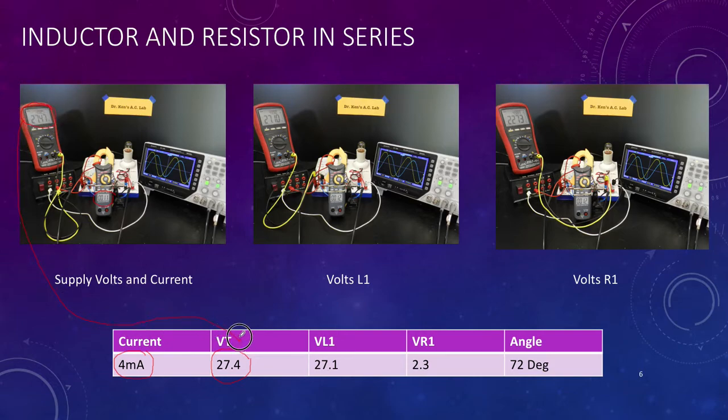Then we needed to know the voltage across the inductor itself. So I've simply moved the leads of the multimeter across here onto the inductor, and we've got 27.1. So that's where this value comes from, 27.1. And then finally, voltage across the resistor itself, at about 2.23.